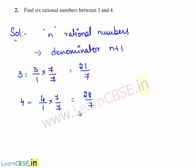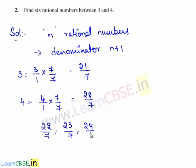Therefore, the six rational numbers between 3 and 4 are 22/7, 23/7, 24/7, 25/7, 26/7, and 27/7.